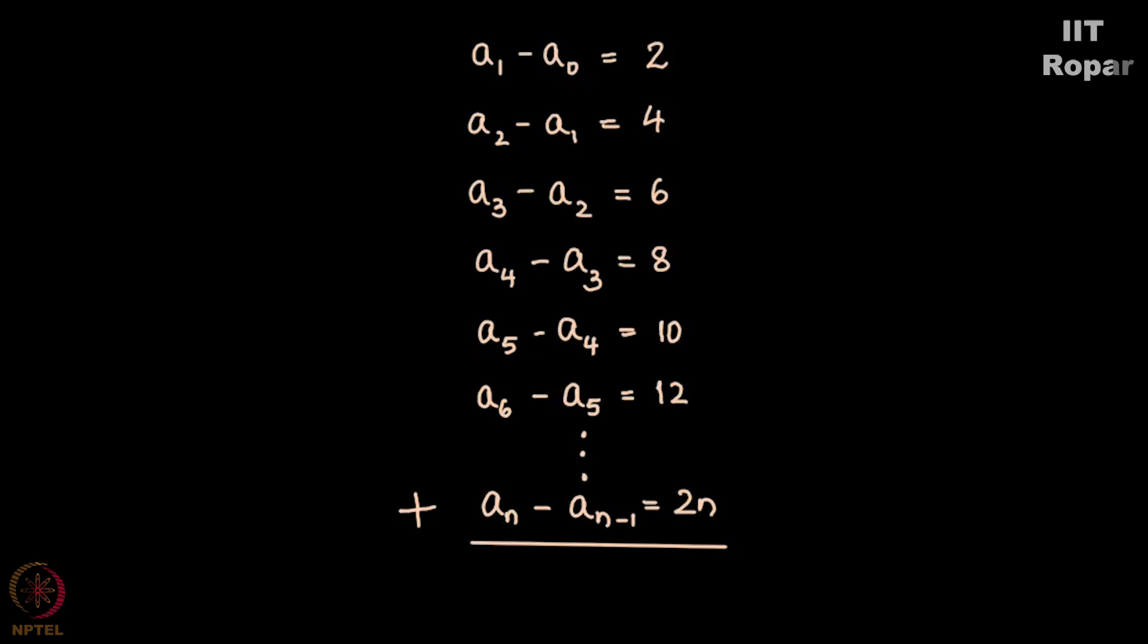Basic math tells me that I can sum these by canceling some terms. What are those terms? A1 - A1, A2 - A2, A3 - A3, A4 - A4, A5 - A5, all these terms get canceled. An-1 - An-1, this also gets canceled.